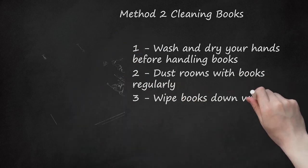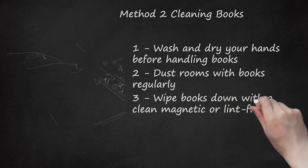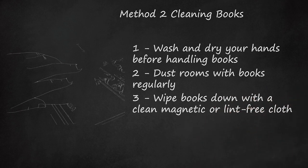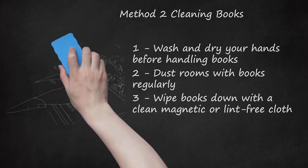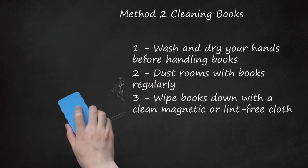Wipe books down with a clean magnetic or lint-free cloth. The best way to clean old books is with a microfiber cloth that traps dust inside. Instead of just blowing the dust around, as with a feather duster, these types of cloths will trap the dust and remove it completely. Don't use water or other solvents to try to clean books. Most books should not need to be cleaned in any way other than gentle dusting.